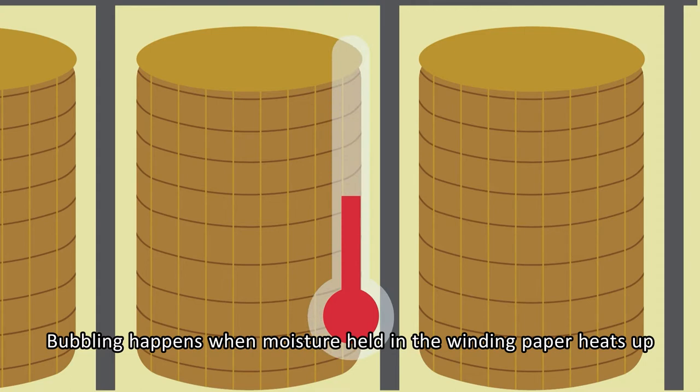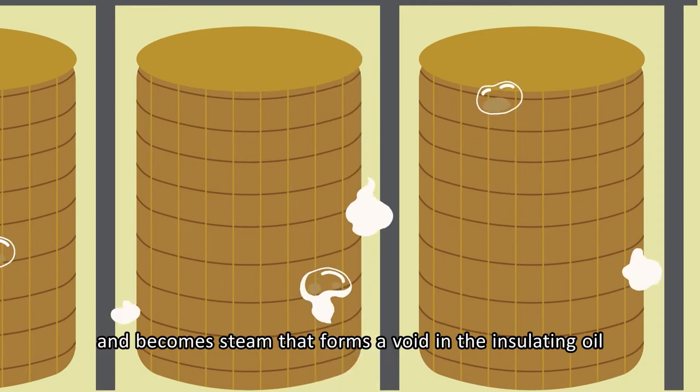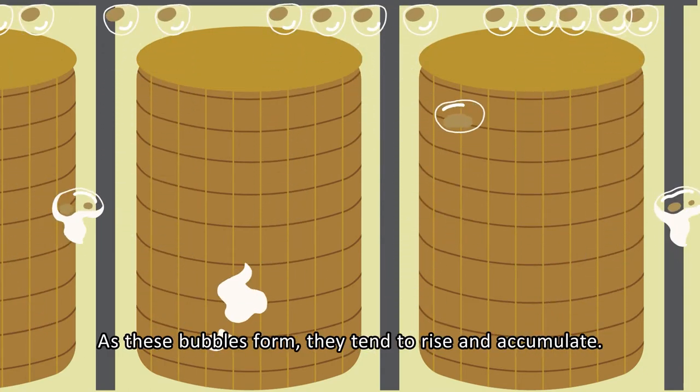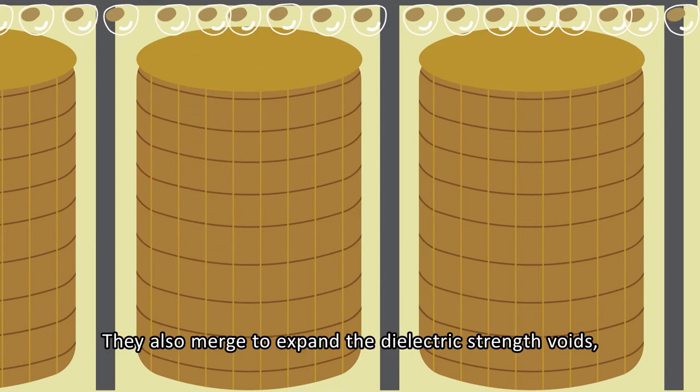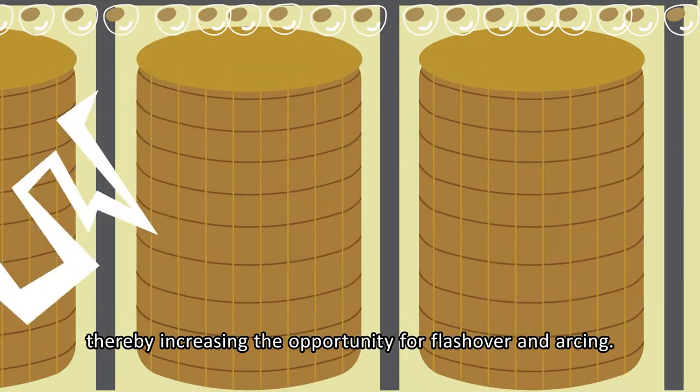Bubbling happens when moisture held in the winding paper heats up and becomes steam that forms a void in the insulating oil. These voids have lesser dielectric strength than insulating oil. As these bubbles form, they tend to rise and accumulate. They also merge to expand the dielectric strength voids, thereby increasing the opportunity for flashover and arcing.